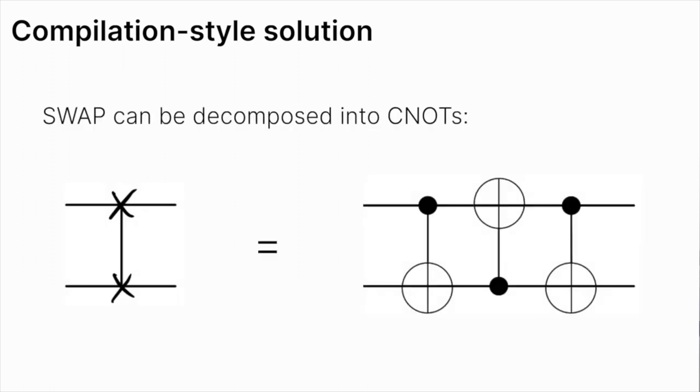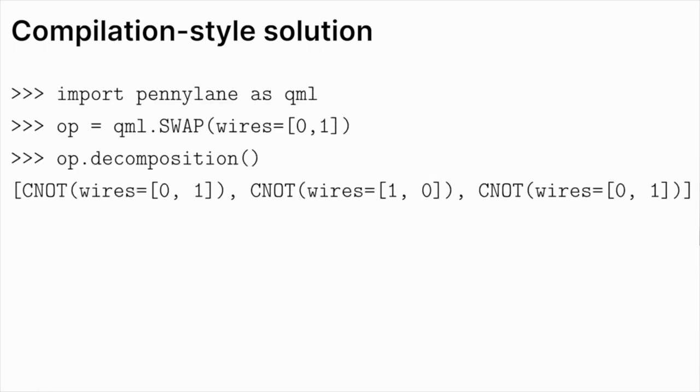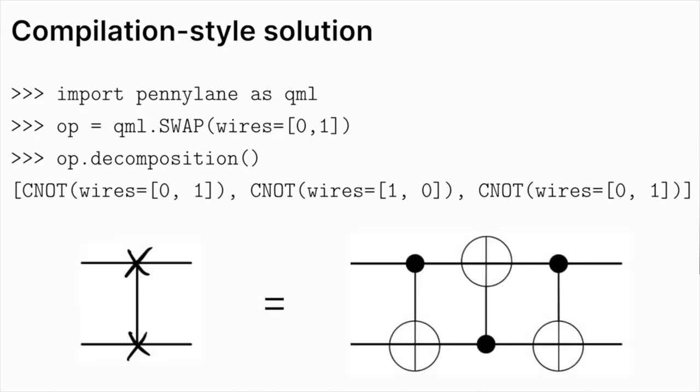The first property that we have to know, and probably one of the most important, is that the SWAP gate has a specific decomposition. We can change the SWAP gate for these three CNOTs. In case you don't know the decomposition, well, in PennyLane, you can always ask for the decomposition of a particular gate. For example, if we run here this code, we are going to get this output here. It means that with these three CNOTs, we can build our operator.